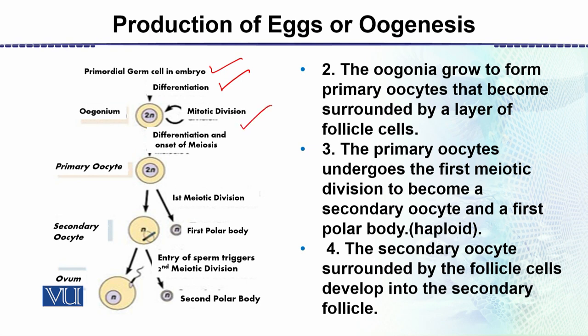The primordial germ cell undergoes the process of mitosis, and many cells are formed. Through this process the number grows — five to seven million cells are produced by the process of mitosis, and being mitosis they remain diploid cells.